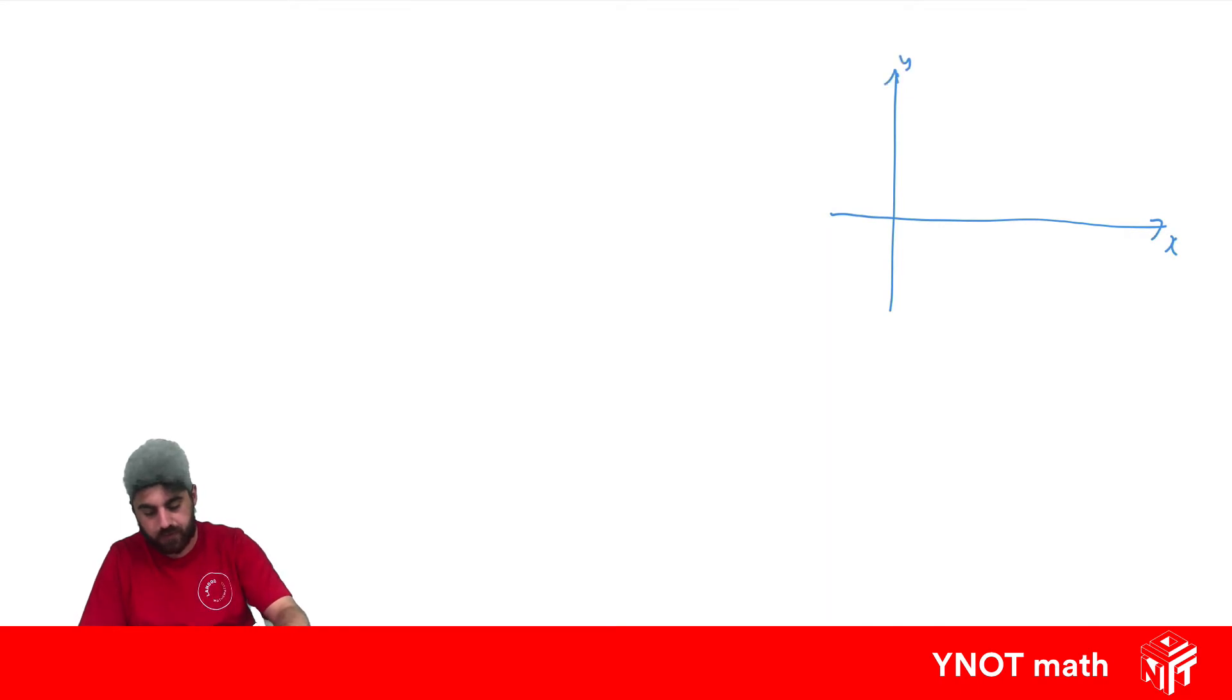So our sine function looks something like that and it goes forever. And what happens as we get smaller values for x here? Well, we're getting closer and closer to zero. What's happening to y, the y values? Well, y is also getting closer and closer to zero.